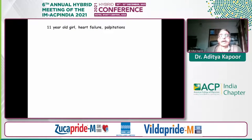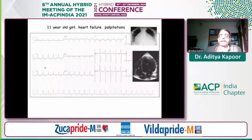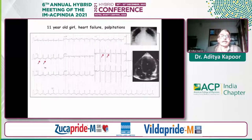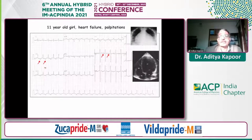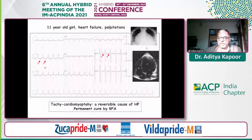Switching gears — an 11-year-old girl with heart failure and palpitations. The ECG shows a long RP tachycardia originating from the lower right atrium. The X-ray shows huge cardiomegaly and there is left ventricular dysfunction. This is very diagnostic of tachycardiomyopathy. These patients are often permanently cured by radiofrequency ablation, as happened in this patient, and LV function is recoverable.